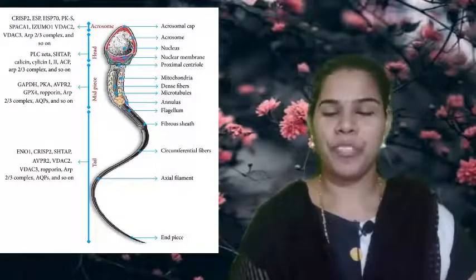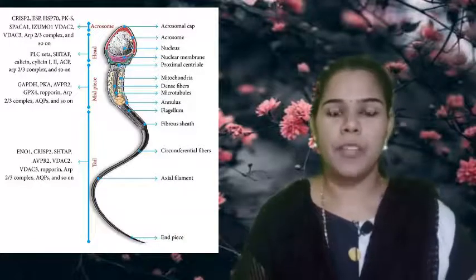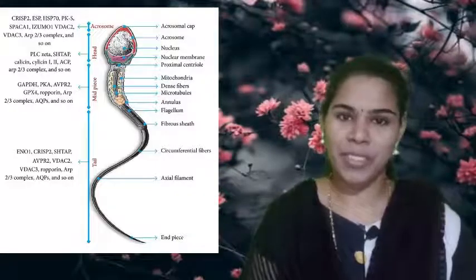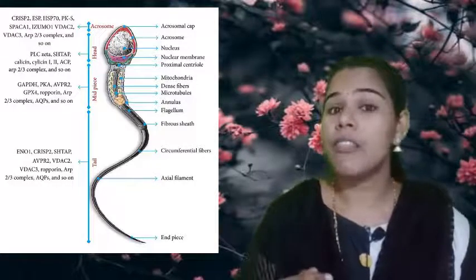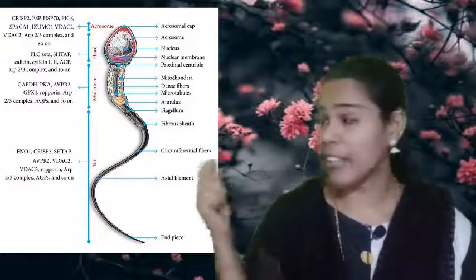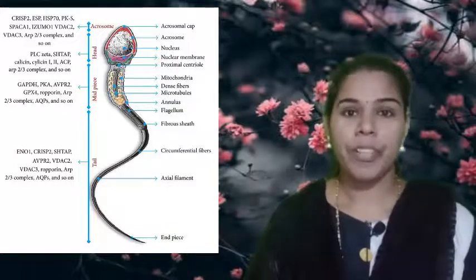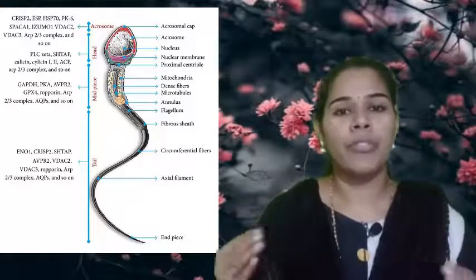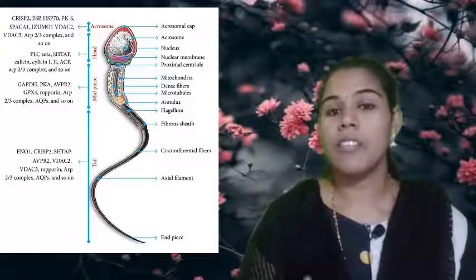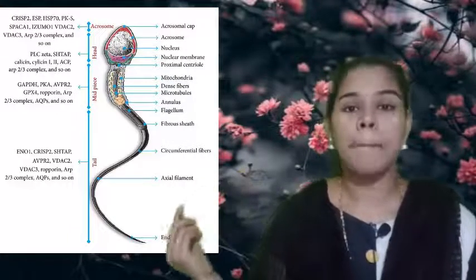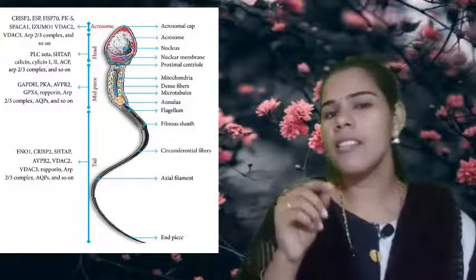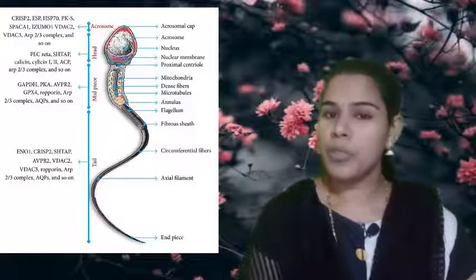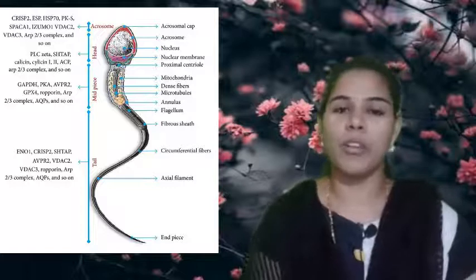Look at this picture. This is a sperm. Sperm is a single cell, and we can observe the sperm with the help of a microscope. It consists of three parts: a head region, a middle region, and a tail portion. The tail portion helps the sperm to move. The single-cell sperm also consists of all the basic cell components, which we will learn in detail in 9th standard.